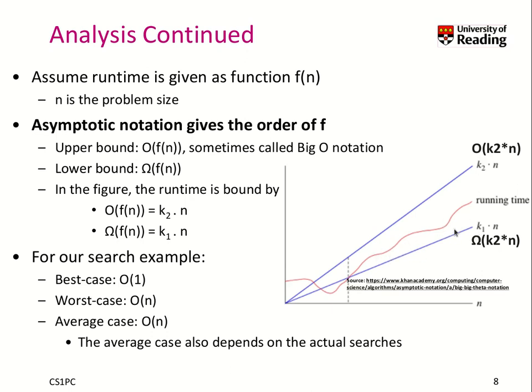We say the upper bound is O of something. Here it is O of k2 times n, which is our line, and this notation you will often refer to as big O notation. We also have here an omega, which is the lower bound, the minimum runtime. Now we have basically this corridor in which the runtime of this specific algorithm may behave.